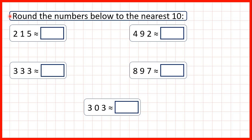We need to round the numbers below to the nearest 10. So first we have 215. Because we're rounding to the nearest 10, we need to remember the place value of each digit. In a three-digit number, we have our hundreds, then our tens, then our ones. Because we're rounding to the nearest 10, we can start by circling our tens digit and then underlining the digit to the right — our ones digit.